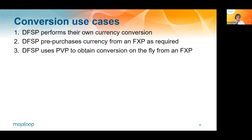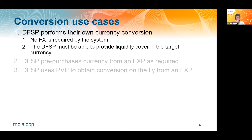And finally, where a DFSP uses payment versus payment to obtain conversion on the fly for an individual transfer from a foreign exchange provider. So if a DFSP performs their own currency conversion, there isn't any FX, any currency conversion required by the system. The only requirement is that the DFSP must be able to provide liquidity cover in the target currency. And the existing architecture of Mojaloop should be capable of handling that, so we wouldn't need to do anything in order to provide that.